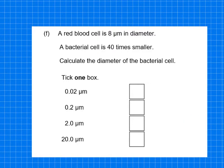This question doesn't really ask about cell magnification as such, but it is asking us to do a math skill. It tells you a red blood cell is 8 micrometers in diameter and says that a bacterial cell is 40 times smaller. Calculate the diameter of the bacterial cell. It's quite simple: you just take the 8 divided by 40, and that gives you the answer of 0.2 micrometers.